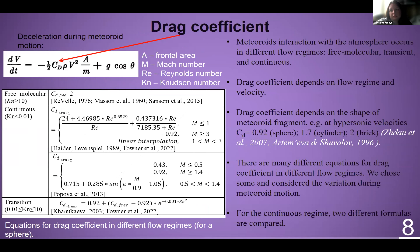Meteoroid interaction with the atmosphere occurs in different flow regimes: free molecular, transition, and continuous. Here you can see the equation for deceleration during meteoroid motion, and the drag coefficient, which depends on flow regime, velocity, and the shape of the meteoroid fragment. There are many different equations for the drag coefficient in different flow regimes. We chose some — you can see them in the table — and considered the variation of the drag coefficient during meteoroid motion. For the continuous regime, two different formulas were compared, and all equations are given for a spherical impactor.